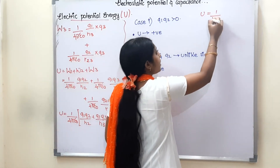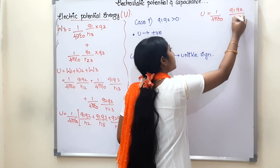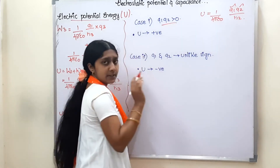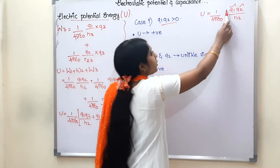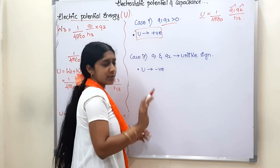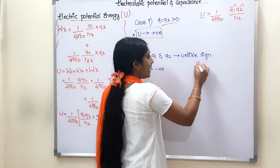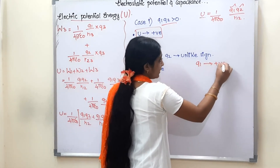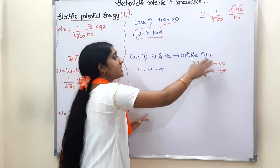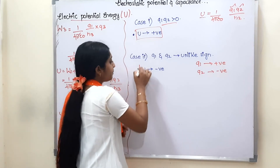Now we have two cases. If Q1 and Q2 are both greater than zero — both positive — then positive times positive makes U positive. Potential energy is positive for like charges. If Q1 and Q2 are unlike signs, for example Q1 is positive and Q2 is negative, then the product is negative, so potential energy is negative.